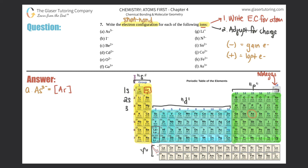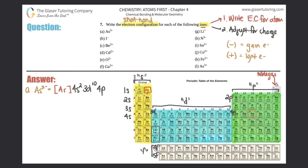We go through every single box to get to number 33. Starting here, that is the 4s — remember s's start with 1, so 1s, 2s, 3s, 4s. The p's start with 2, d's start with 3 so this first group is 3d, and f's start with 4. So we have 4s2, then we're in 3d land: 3d10. Then we're at 4p — that's 4p3.